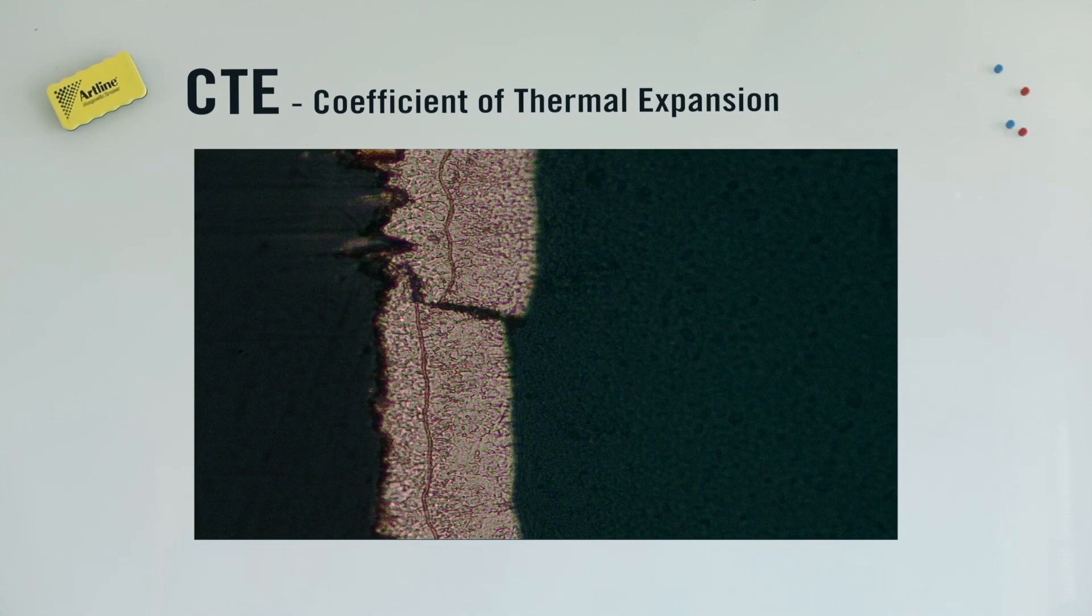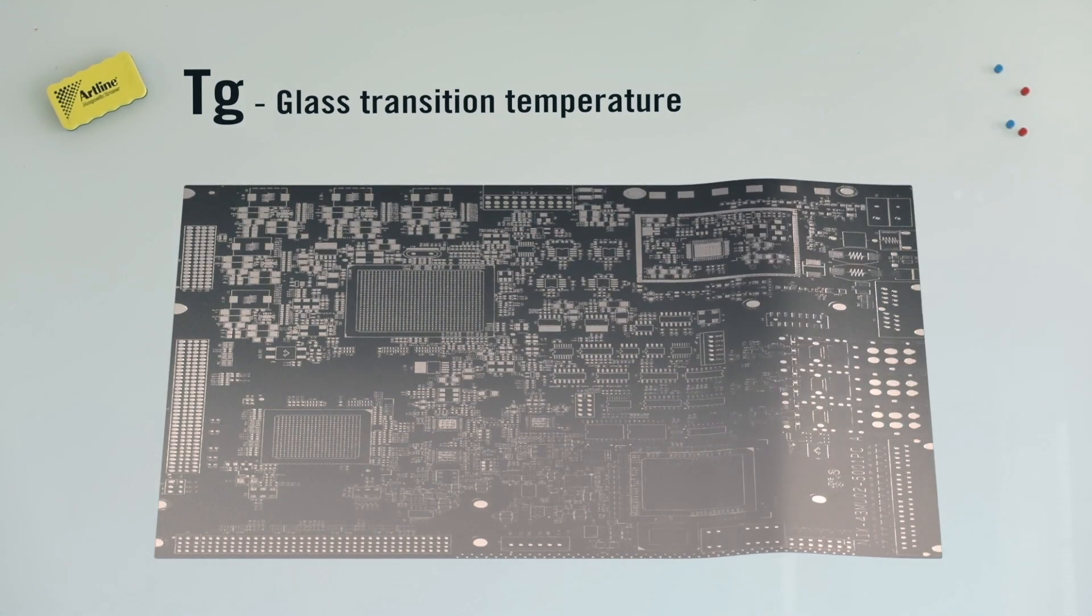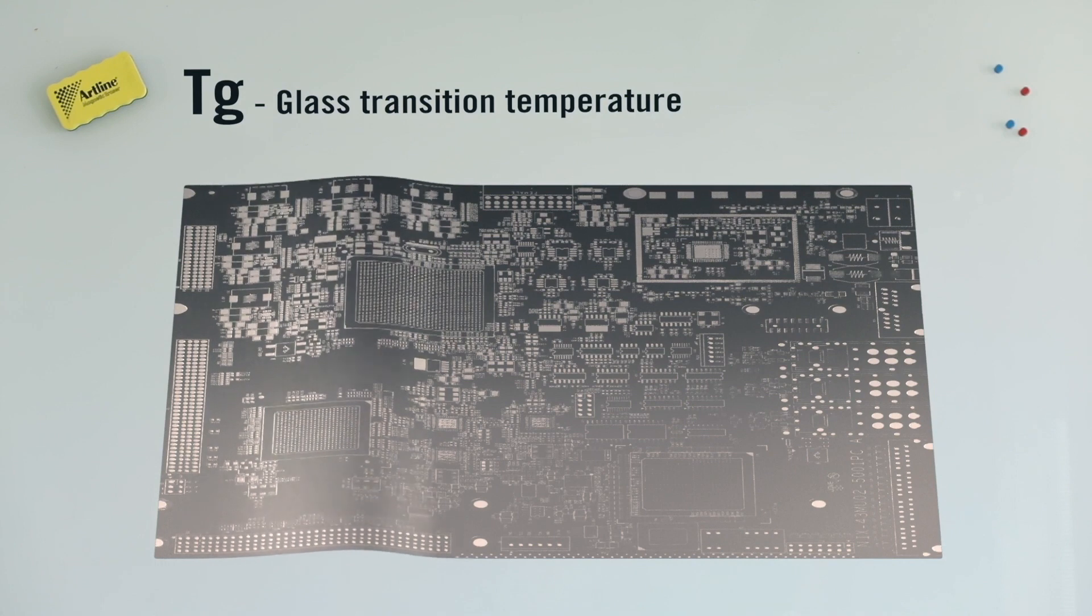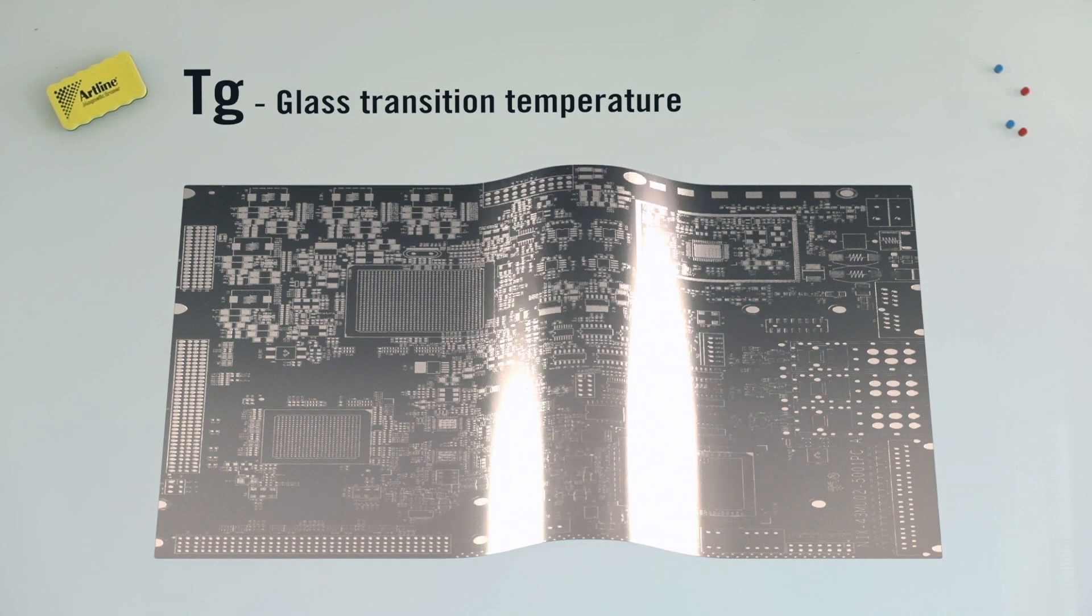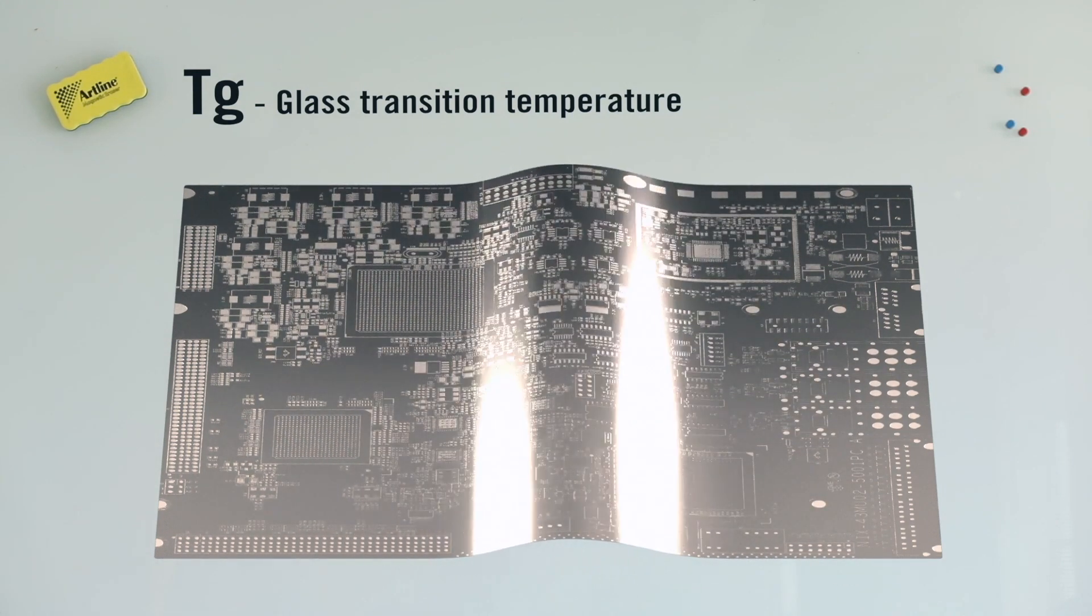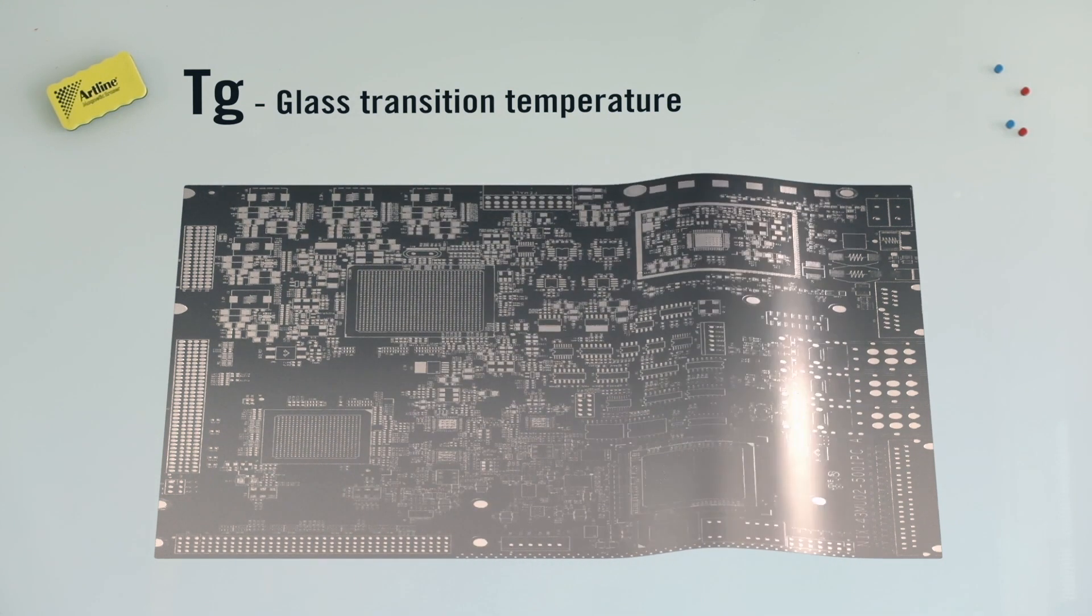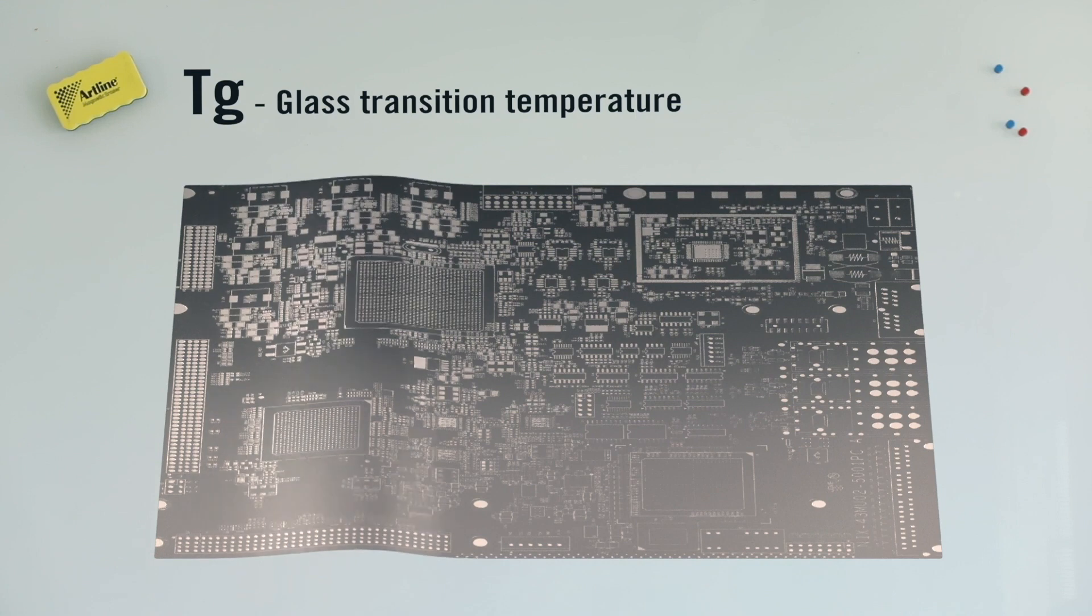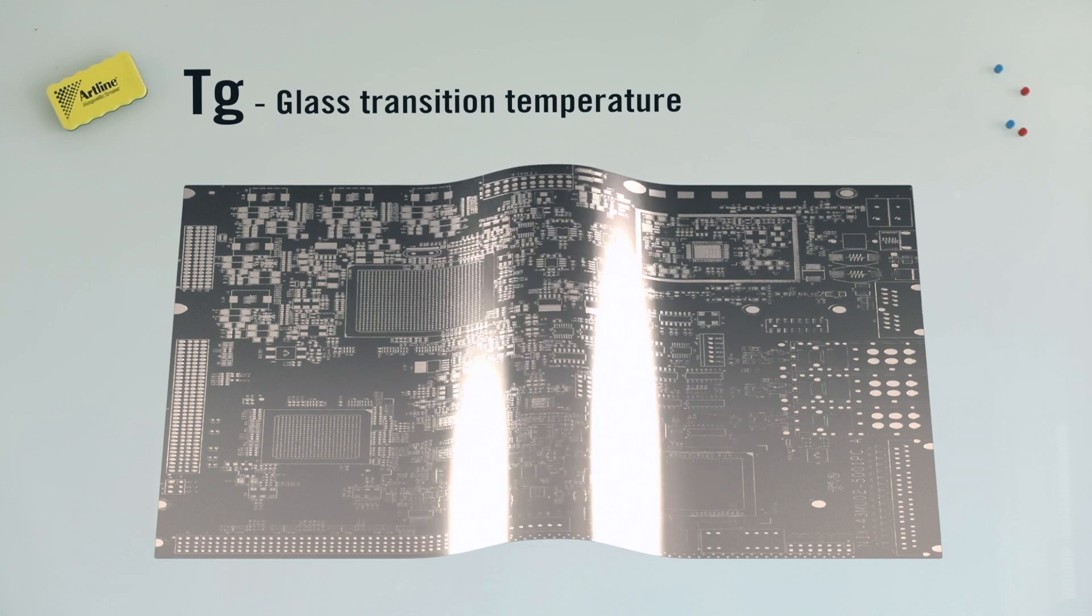The Tg, or glass transition temperature, is the value of the temperature at which the material changes from a reasonably stiff glass-like material to a more elastic and bendable plastic-like material. Important is above Tg, the material's properties will change, such as the expansion of the material. We will see that above Tg, materials tend to expand more.